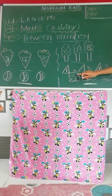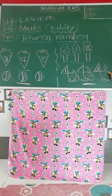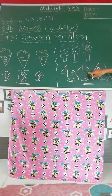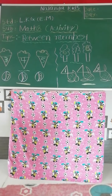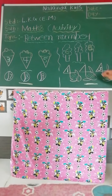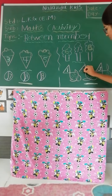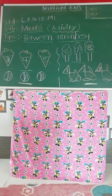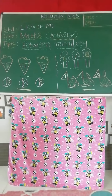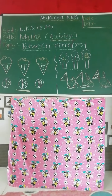Next number is 1 blank 3. So which number goes between 1 and 3? 1 ke baad kosa number aata? 2! Yes — 1, 2, 3.